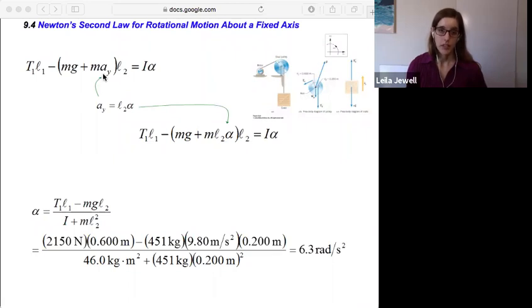The a sub y here is the tangential acceleration of the pulley. So we could write it in terms of the angular acceleration of the pulley if we take the radial distance r is L2 times the angular acceleration. So we'll fill that in here. Instead of subtracting by mA it'll be by m times L2 times alpha.